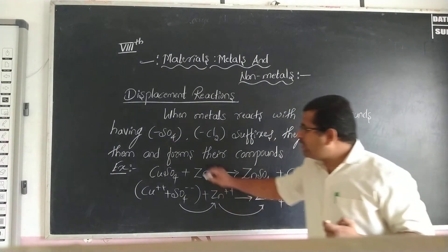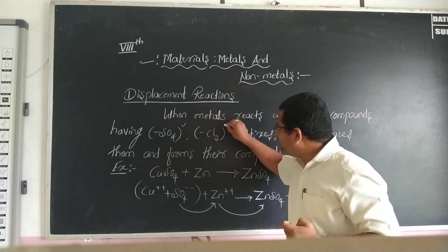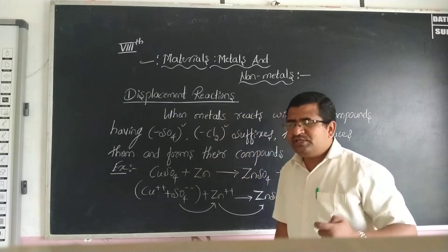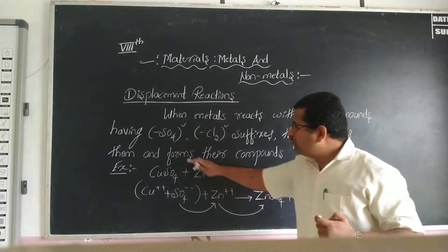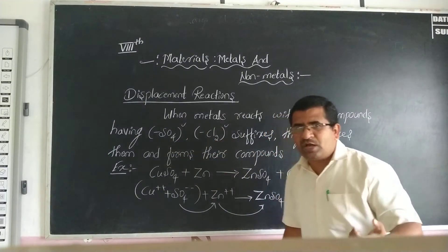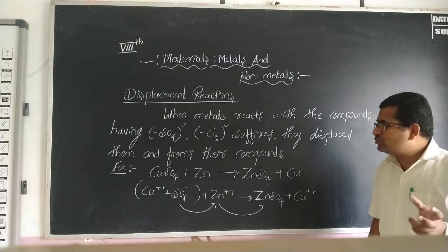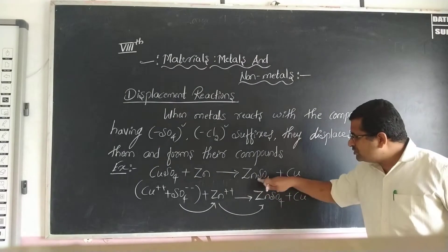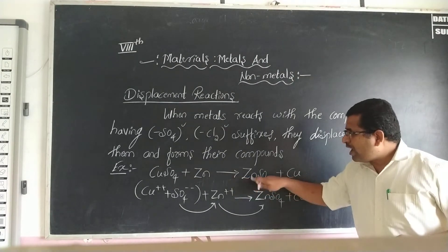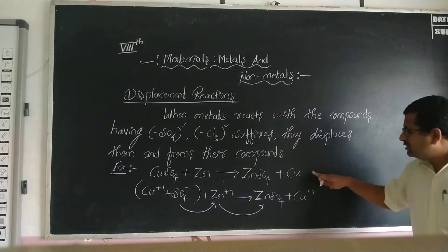These compounds have sulfate and chloride groups. The reactive metal displaces the sulfate and chloride groups from the compounds during the chemical reaction, forming their own compounds while that metal is displaced.